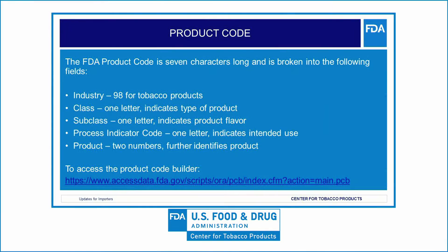FDA frequently receives questions about how to determine the correct product code for an imported product. The FDA product code is seven characters long and broken into the following fields. Industry: the first two characters represent the various industries regulated by the FDA; the industry code is always numeric, and the industry code for tobacco products is 98. Class: the third character of the FDA product code, always a letter; for tobacco products, class means the general type of product, such as smokeless tobacco or cigarettes.